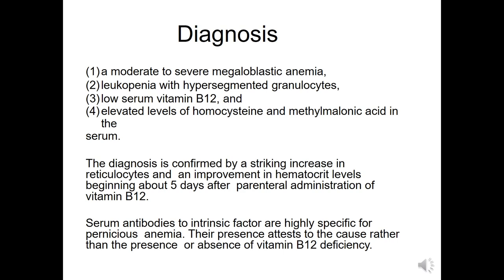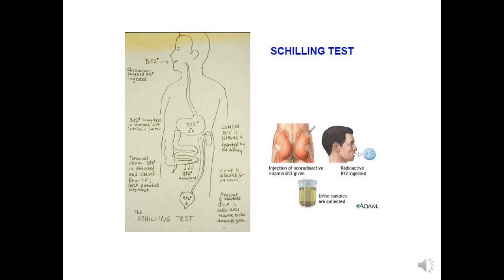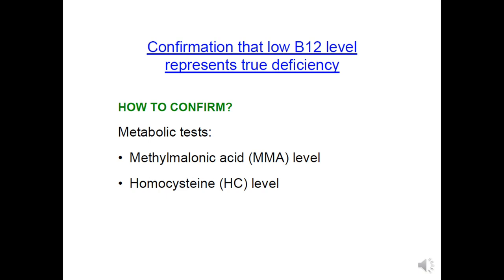Diagnosis of megaloblastic anemia shows moderate to severe macrocytosis, leukopenia with hypersegmented granulocytes, low serum vitamin B12, and elevated levels of homocysteine and methylmalonic acid. Diagnosis is confirmed by a striking increase in reticulocyte count and improvement in hematocrit beginning about five days after parenteral administration of vitamin B12. The gold standard for confirming B12 deficiency is checking methylmalonic acid and homocysteine levels — if B12 deficient, both levels are raised. The Schilling test has historically been used to confirm pernicious anemia.